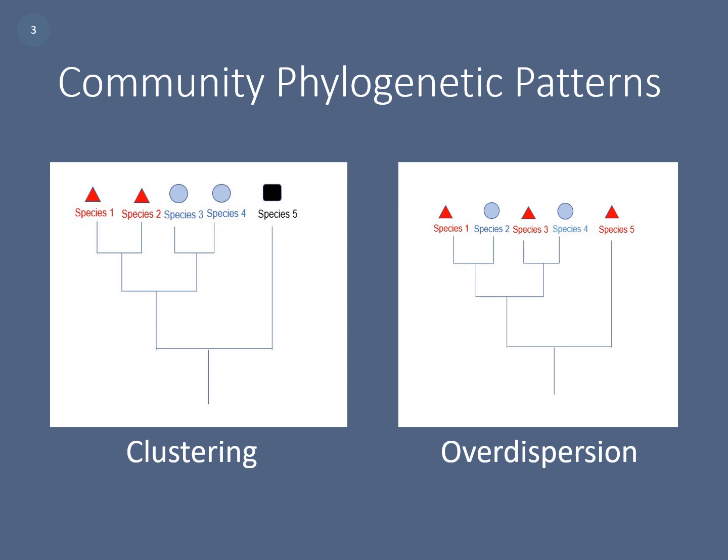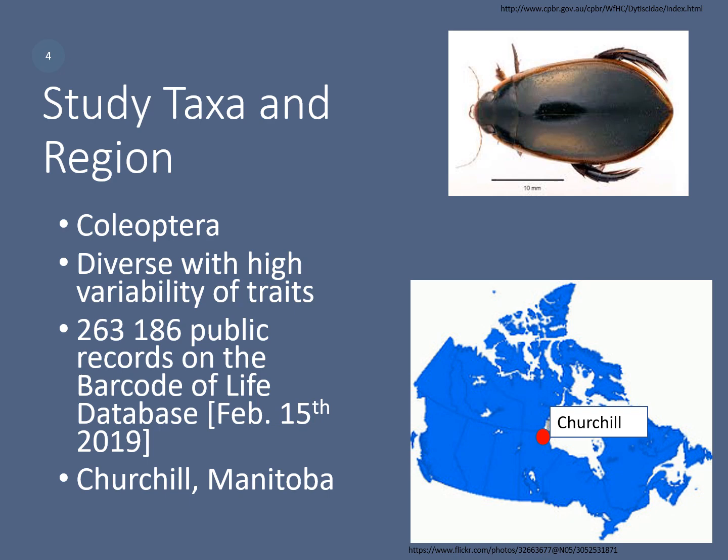For this study, I chose to focus on Coleoptera, or beetles, due to their high diversity and variability of traits. There were 263,186 public records on the Barcode of Life Database as of February 15, 2019. DNA sequence data is a rich source of data for inferring relationships. DNA barcodes are standardized DNA sequences used for specimen identification and species discovery. The barcode most commonly used for animals is an approximately 658 base pair region of cytochrome C oxidase subunit 1, or CO1, a mitochondrial gene.